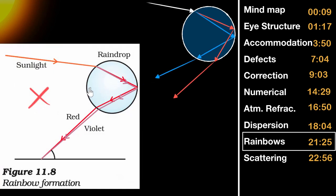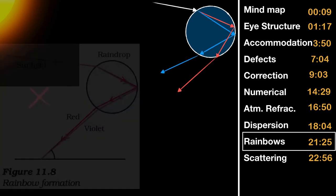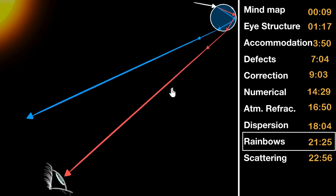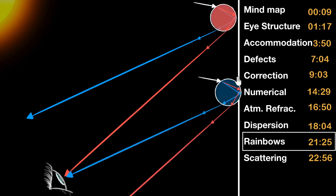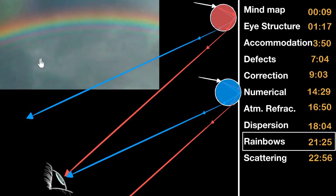NCERT has a couple of mistakes in the rainbow diagram. First, red should be at the bottom when exiting the drop and violet or blue on top — NCERT has reversed this. Second, NCERT shows red and violet combining to give the rainbow, which is wrong: red and violet actually separate out, just like in a prism. A single drop doesn't give you the entire rainbow. Looking at one drop from a certain angle you see only red, while a lower drop shows blue. A rainbow is formed by countless raindrops — you will always see red on top and violet at the bottom.